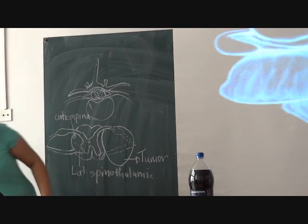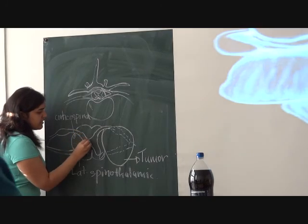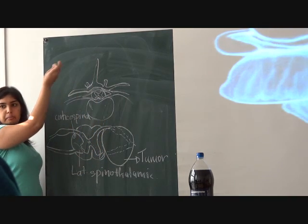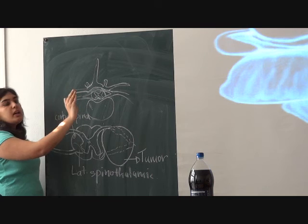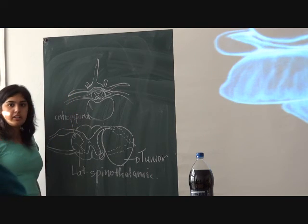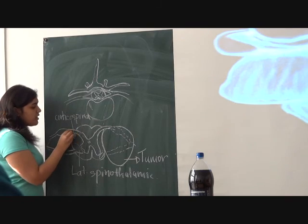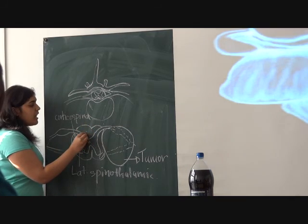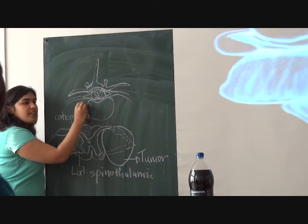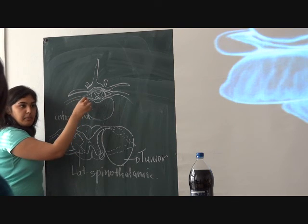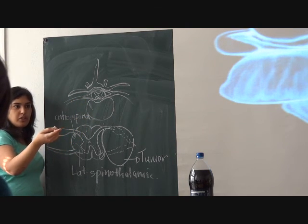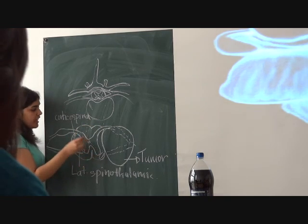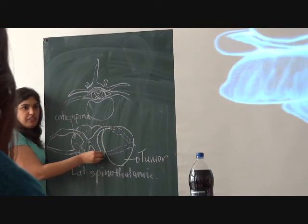After crossing in the spinal cord, the spinothalamic tract goes directly up to your parietal cortex. But the dorsal column, which is responsible for discrimination and proprioception, goes up without crossing here — it goes up and crosses at the medulla.